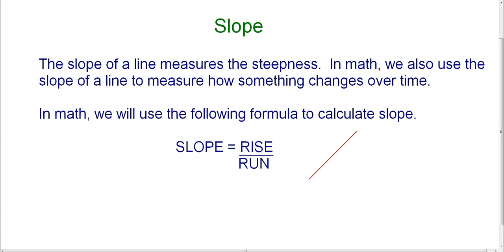In math, we will use some problems to determine how physically steep a hill or mountain or some sort of line may be, but we may also use it to measure how something changes over time. You'll see this when you get to the rate of change lesson in the graphing equations unit, because that's where we will also refer to slope. But whether you're talking about physical steepness or rate of change, you're always going to use a specific formula for calculating slope.